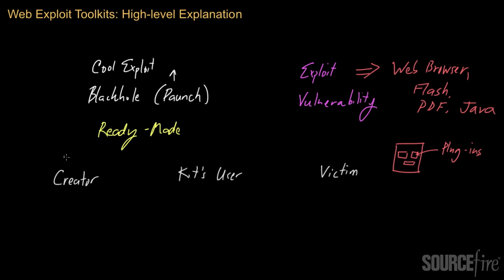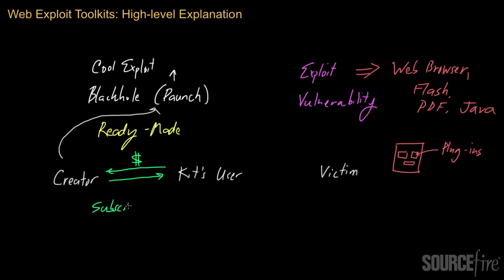As mentioned earlier, Black Hole was developed by a guy named Paunch. What he typically does is take his Black Hole toolkit — which is ready-made and packaged — and sell it to a cyber criminal. Many toolkits in the web exploit market are sold as subscription services, so you're really paying for a license, much like you would with software, to use that kit for a certain period of time.